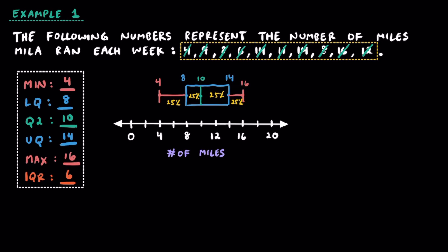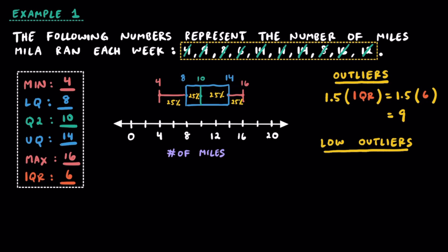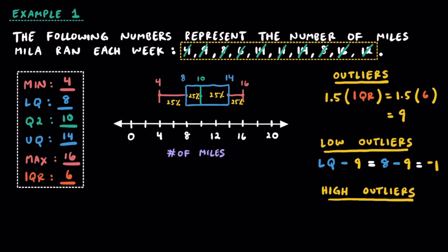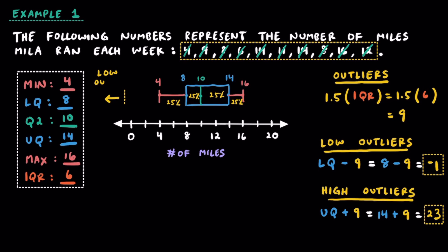Now let's talk about outliers. To find outliers, we take 1.5 and multiply it by the IQR. Since our IQR is 6, we multiply 1.5 times 6, which equals 9. To determine if there are any outliers on the low side, we take the lower quartile and subtract 9: 8 minus 9 equals negative 1. Since Mila can't run negative miles and negative 1 isn't even in the data set, there are no outliers on the low end. To check for outliers on the high end, we take the upper quartile and add 9: 14 plus 9 equals 23. If there was one week that Mila happened to run more than 23 miles, that would be out of the ordinary. Anything less than negative 1 or anything greater than 23 would represent an outlier.